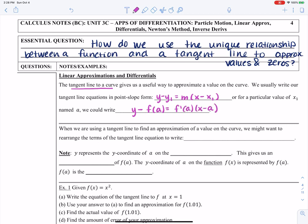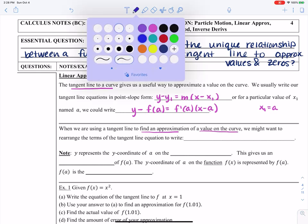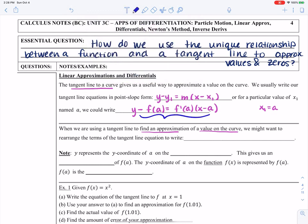So we can use tangent lines to actually find an approximation of a value on a curve. So let's say we were to solve this equation right here for y. I could now write it as y equals f prime of a times x minus a plus f of a.